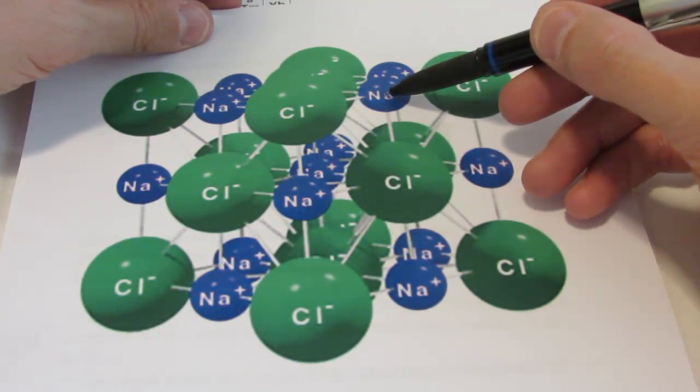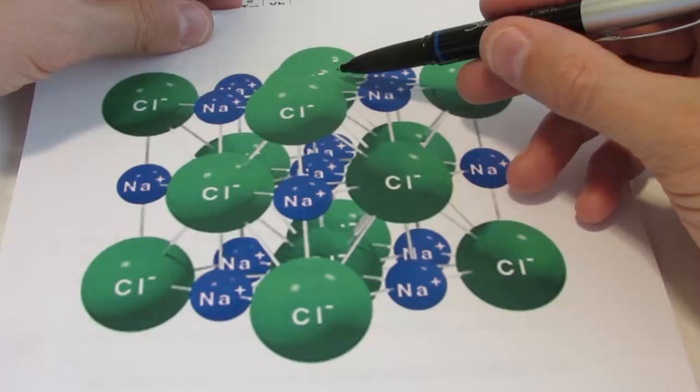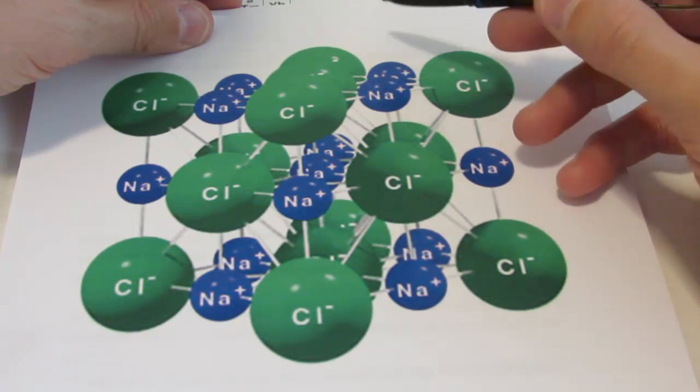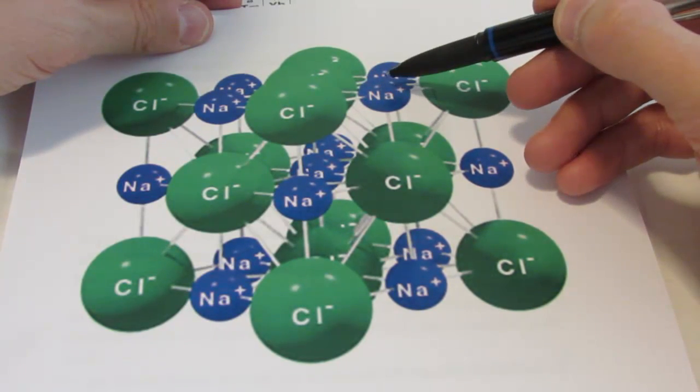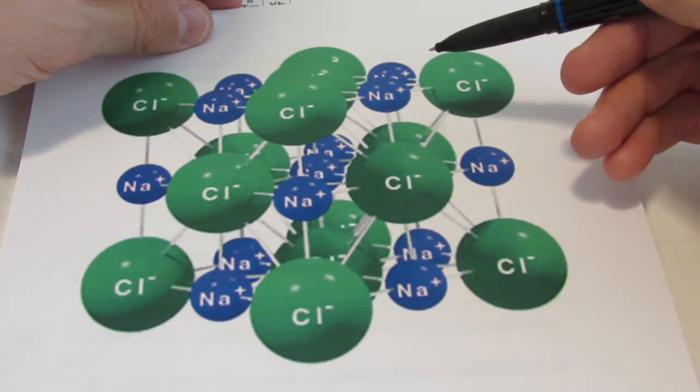Do you notice it's attracted to the chloride to the right? And the chloride to the left, the one below, the one behind it, and wouldn't it be attracted to one on top? And one in front of it.